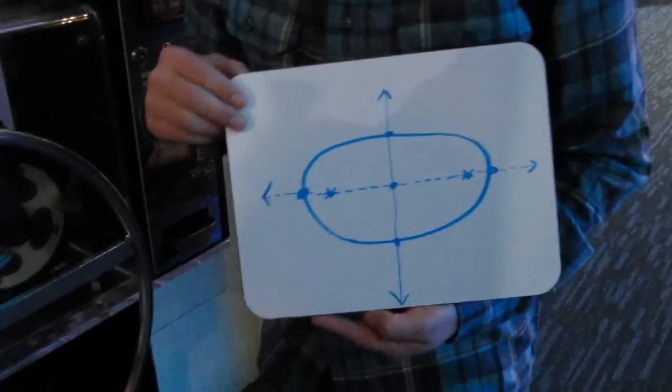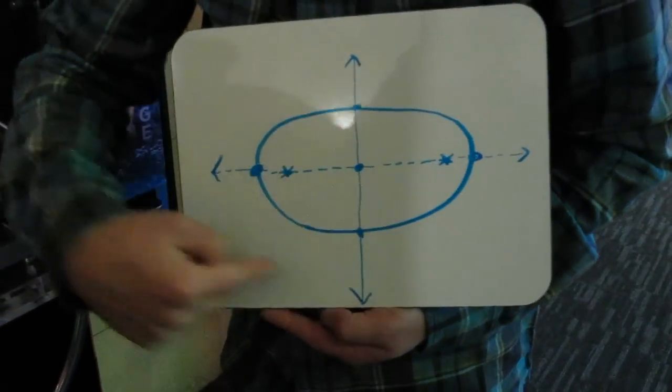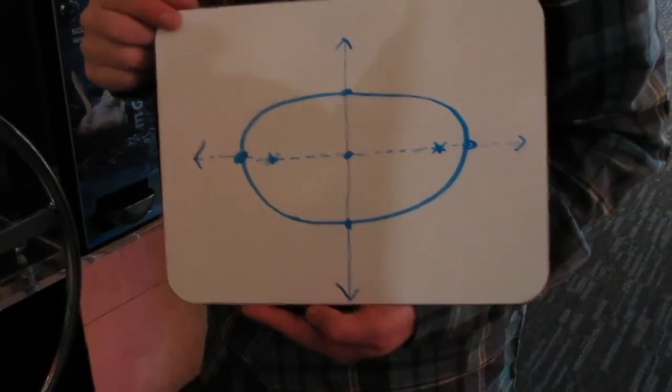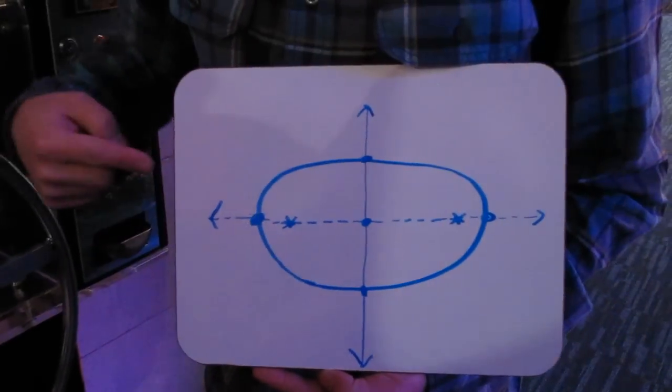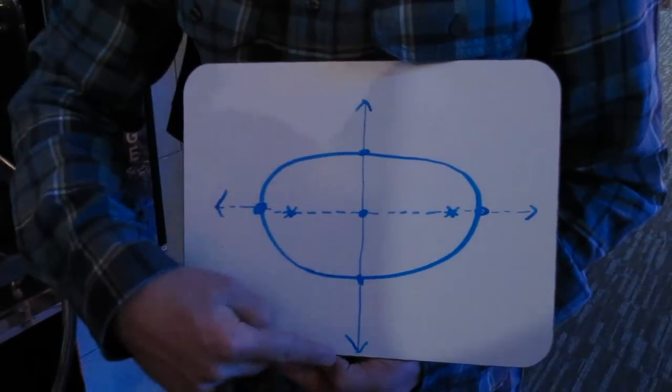An ellipse has a few parts. It has a squashed circle appearance. And it has a major axis, the longer of the two axes, and a minor axis.